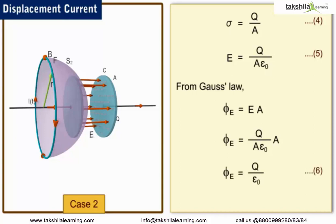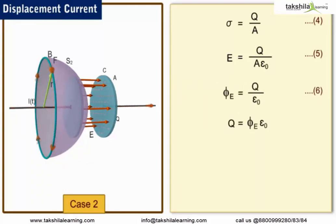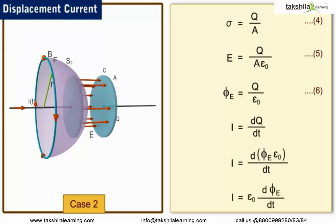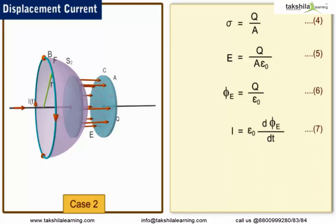Equation 6 can be rewritten to get the charge on the plates of the capacitor: Q = φ_E × ε₀. Due to the time-dependent current source, the charge on the plates changes with time. Thus, the current due to the rate of change in charge, I = dQ/dt. Substituting the charge, we get I = d(φ_E × ε₀)/dt = ε₀ × d(φ_E)/dt — label this equation 7. This is the missing term in Ampere's law: the current due to the changing electric field between the plates of the capacitor. This current is called displacement current, denoted as I_d.